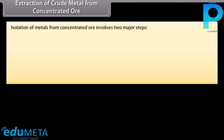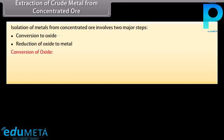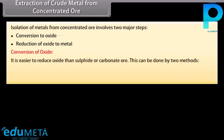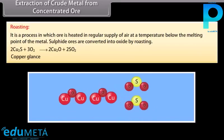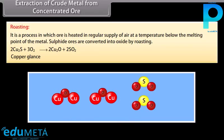Extraction of crude metal from concentrated ore: Since oxides are easier to reduce, isolation of metals involves two major steps — conversion to oxide and reduction of oxide to metal. Calcination involves heating, causing volatile matter to escape and leaving behind the metal oxide. Roasting involves heating the ore in a regular supply of air at a temperature below the melting point of the metal; sulphide ores are converted into oxide by roasting.